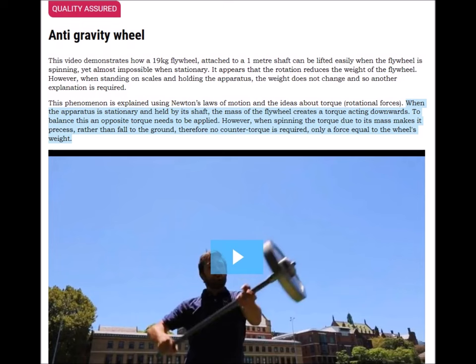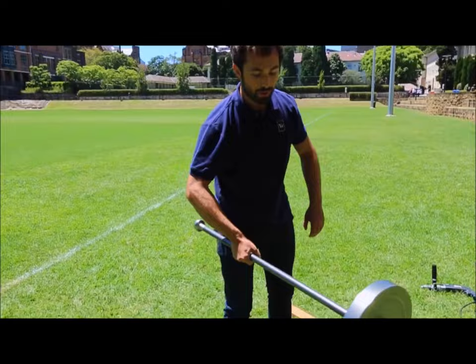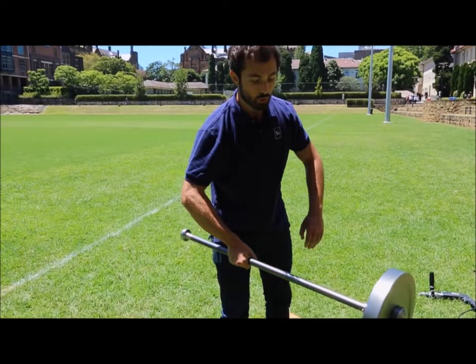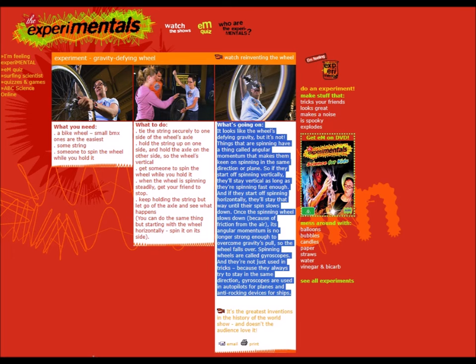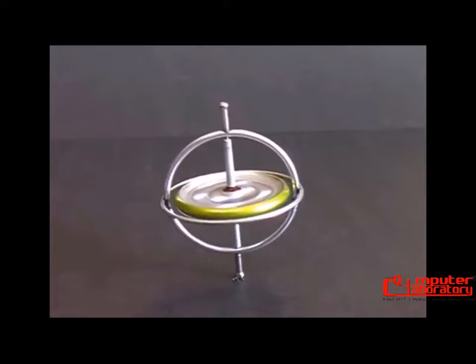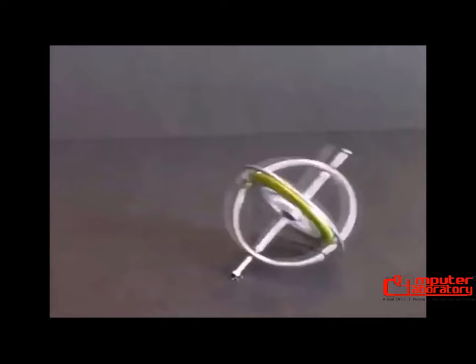This phenomena is explained in terms of conservation of angular momentum as follows: when the apparatus is stationary and held by a shaft, the mass of the flywheel creates a torque acting downwards. To balance this, an opposite torque needs to be applied by an external force. However, when spinning, the torque due to its mass makes it precess rather than fall to the ground. Therefore, no counter-torque is required—only a force equal to the wheel's raw weight. A more detailed explanation says that things that are spinning have angular momentum that keeps them spinning in the same direction or plane. So if they start off spinning vertically, they'll stay vertical as long as they're spinning fast enough, and if they start off spinning horizontally, they'll stay that way until their spin slows down. Once it does slow down, the angular momentum is no longer strong enough to overcome gravity's pull, and so the wheel falls over.